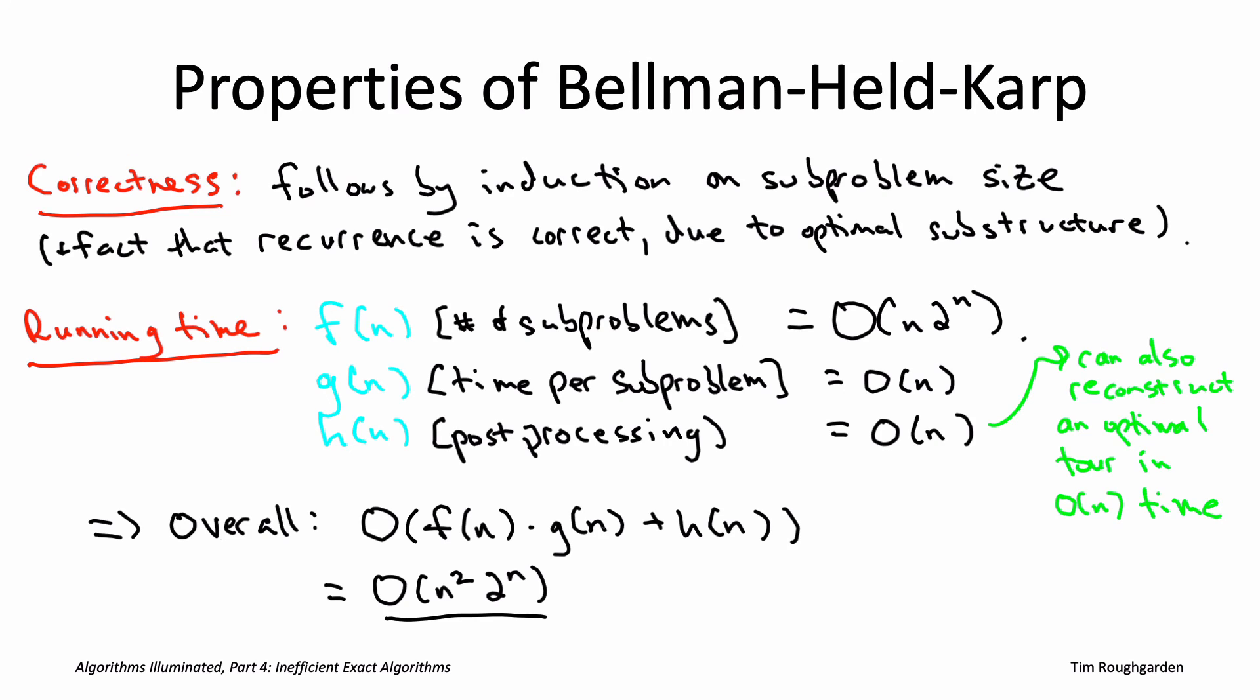So what we're going to move on to next is yet another application of dynamic programming to a problem finding long paths in networks. It will again allow us to roughly double the problem size that you can handle. But actually in biological applications, that doubling of the problem size that you can handle is totally crucial to getting meaningful results. So we'll talk about that in the next video. See you then.